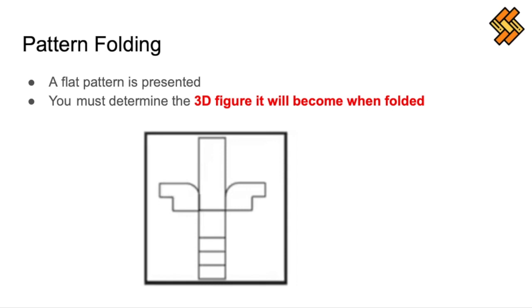In this section, a flat pattern is presented which will be folded into a 3D figure and you will have to determine which of the four answer choices is the correct 3D figure. All folds are made into the screen and away from you. It sounds easy enough, but to be honest, I found this section to be one of the hardest sections of the PAT. So let's go over some of the strategies.